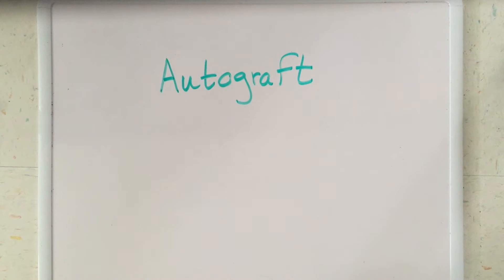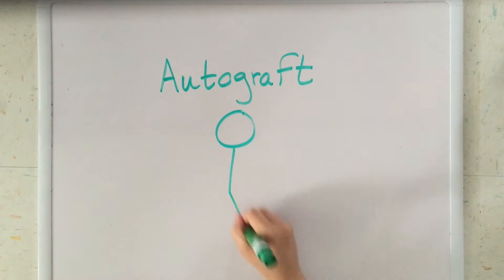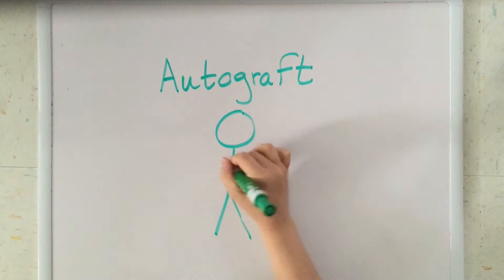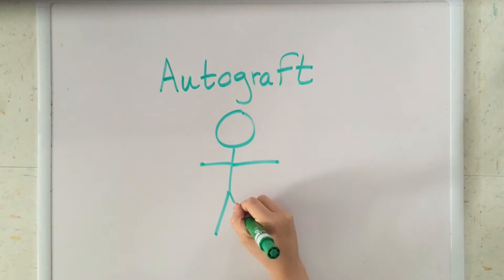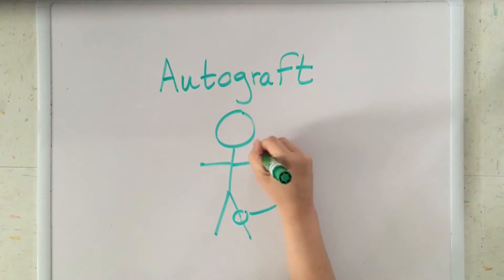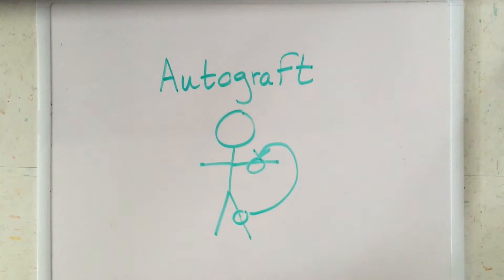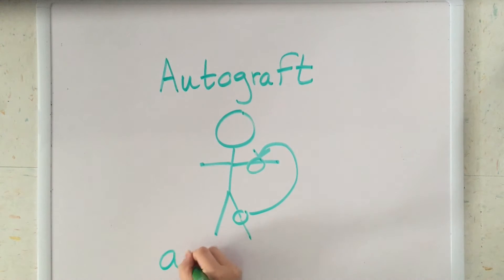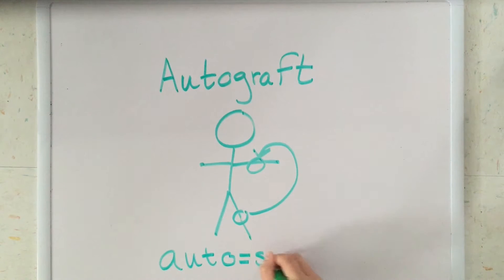The first type of transplant is called the autograft. Autografts are grafts that are taken from one part of the body and transplanted to another. This type of graft is never rejected because it is the person's own tissue.